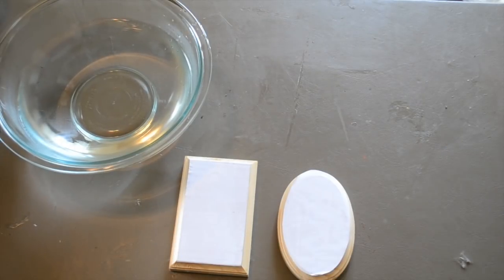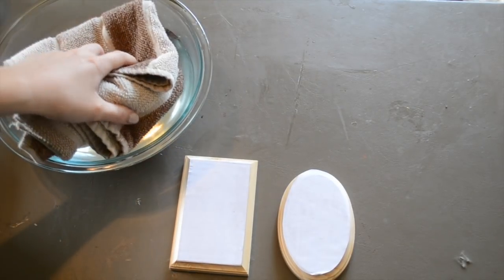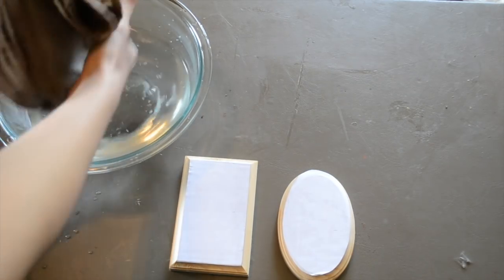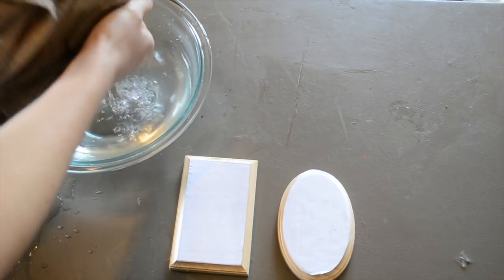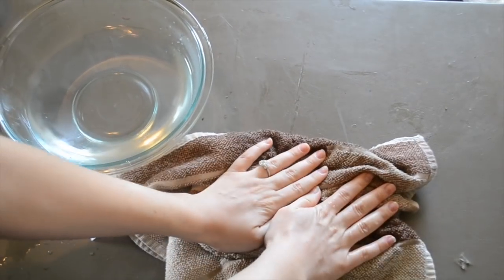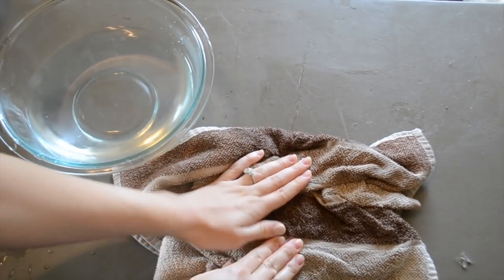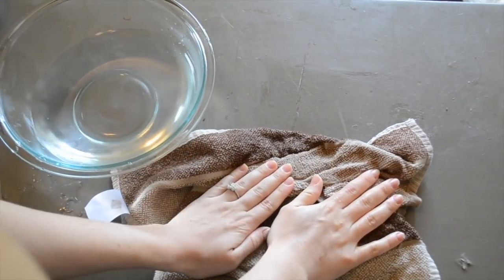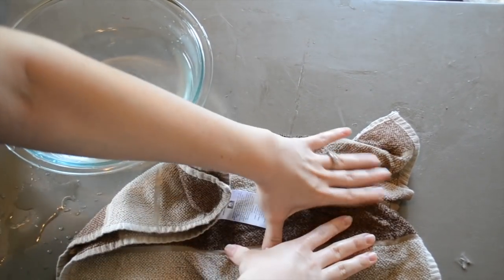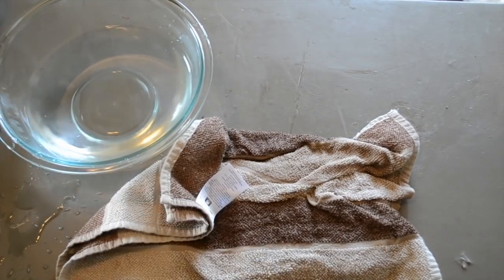So now my photo transfers have set overnight. Now comes the fun part, which is revealing the transfer image. I have this cloth and a bowl of warm water. I'm going to dip my cloth in there, nice and damp. Now I'm going to press it on top of my photo transfers, applying pressure to make sure that they get nice and damp. I'm going to let this sit for five minutes, and then we will come back and start peeling away at the paper.